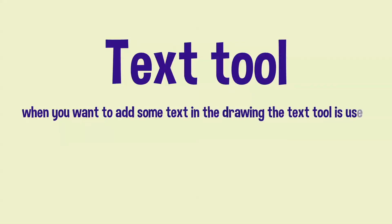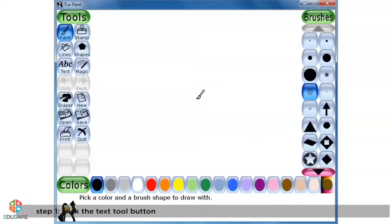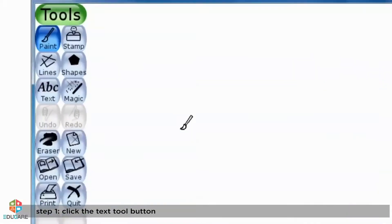The Text Tool is used when you want to add some text in the drawing. To use the Text Tool, follow the steps below. Step 1: Click the Text Tool button.